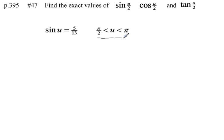This tells us that angle u, between pi over 2 and pi, must be in quadrant 2. So let's start by making a sketch of this angle. This angle u must be in quadrant 2.